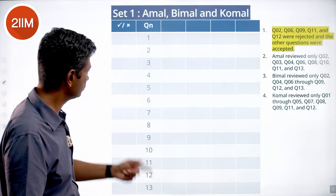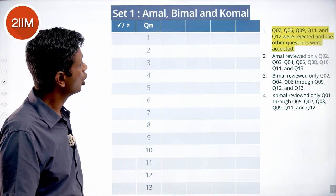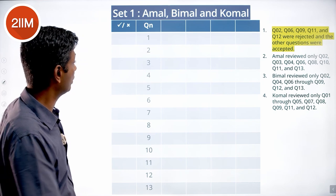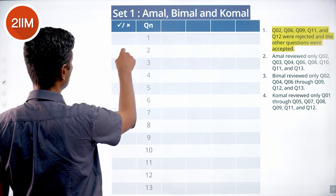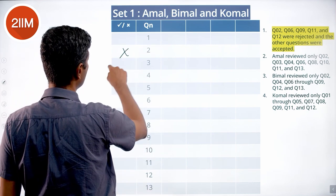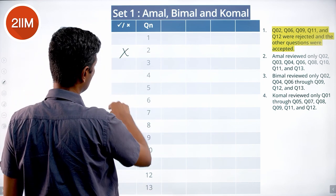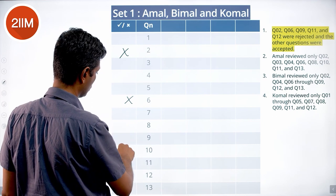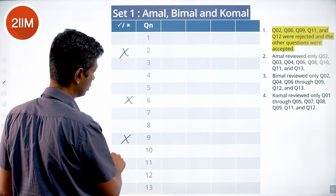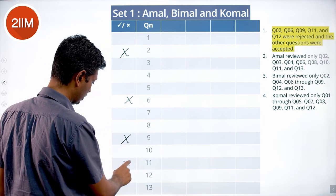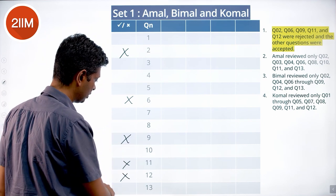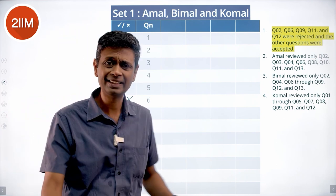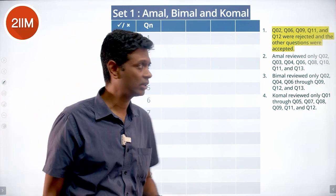So filling in the grid: Q2, Q6, Q9, Q11, and Q12 were rejected; all others were accepted.